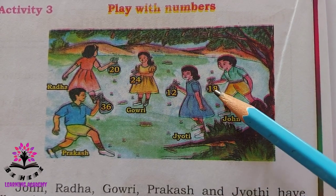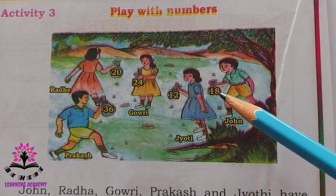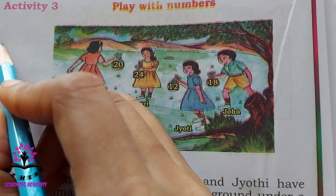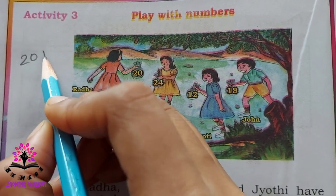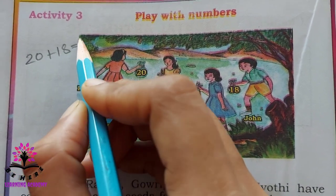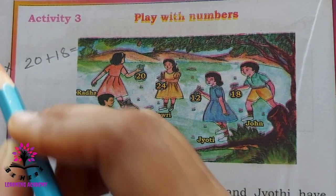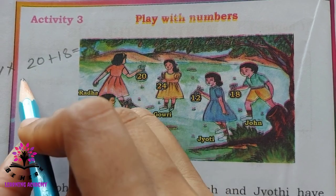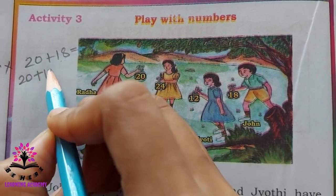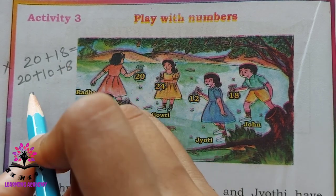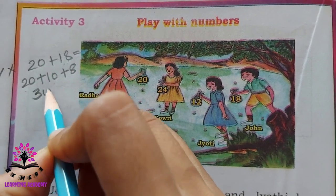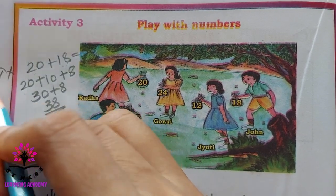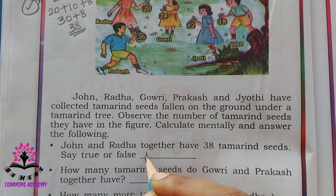So, 20 plus 18: you can write 18 as 10 plus 8. Then 20 plus 10 is 30, plus 8 is 38. Yes, 20 plus 18 is equal to 38, so the answer is true.